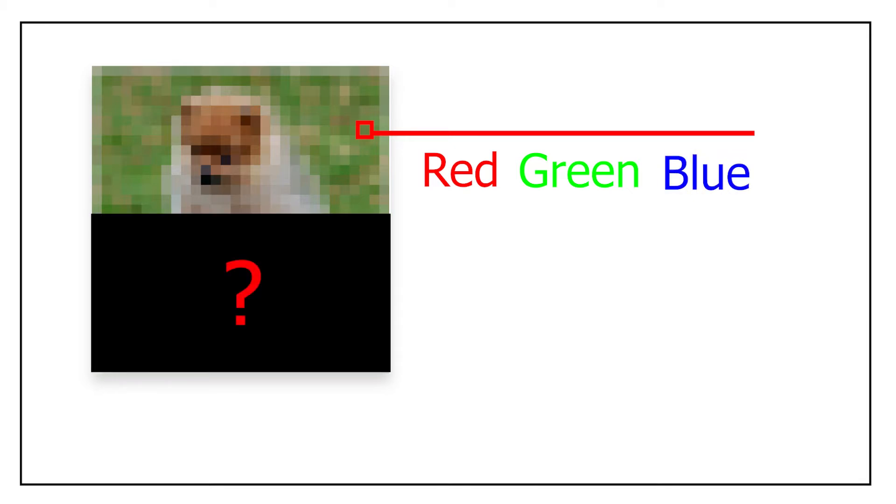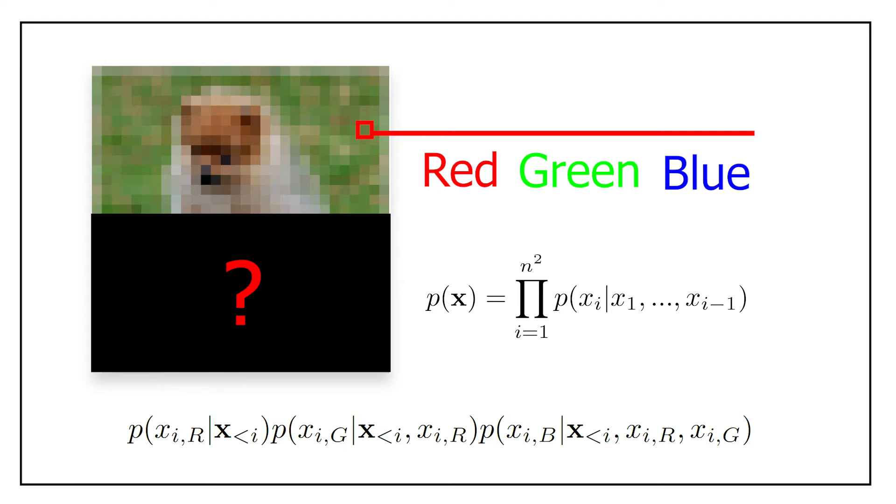To do so it uses the following joint distribution that can be read as the product of the probabilities of the i-th pixel xi given all the previous pixels x1 to xi-1. Modifying this expression to take in account the RGB components of a pixel, we rewrite the probability for a pixel as the product of its probabilities for each RGB channel.